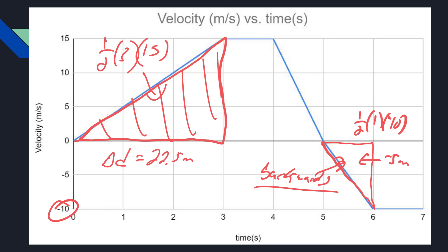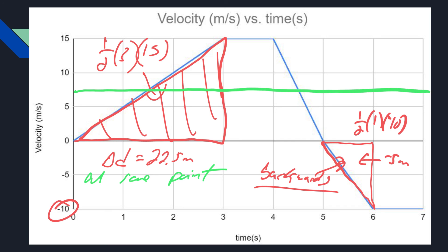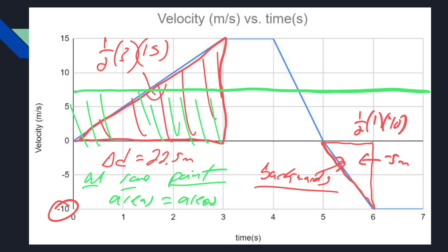A very common question is comparing two objects — say a car moving at a constant velocity shown as a flat line on the velocity-time graph. They might ask when do the two meet, or when are they at the same displacement. You just find the areas under both curves and figure out when the two areas are equal — that's when they're at the same location. Based on this graph, that would be approximately three seconds in.